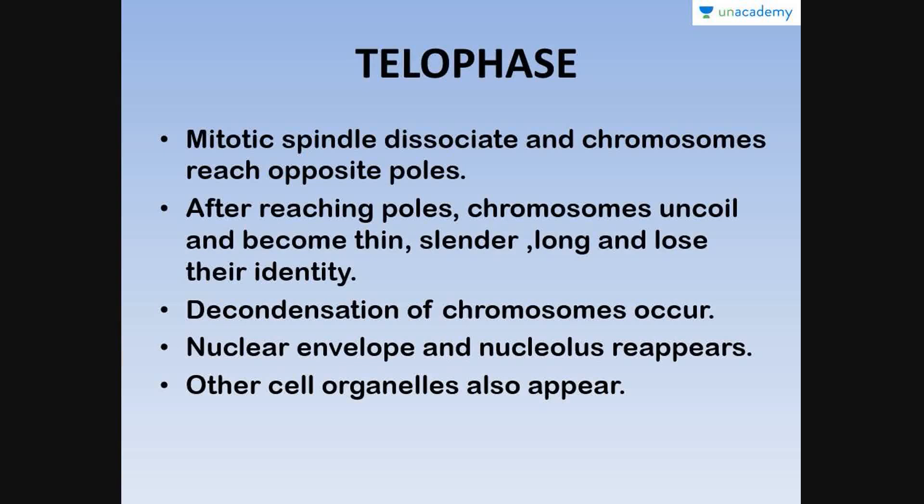Telophase — telo means end — is the end stage of mitosis. During this stage, the short condensed chromosomes start decondensing, becoming thin, slender, long, and coiled once again, losing their distinct identity. The nuclear envelope and nucleolus, which had disappeared, now return. Other organelles that had disintegrated also return, and one of the major events is that the mitotic spindle completely disappears.